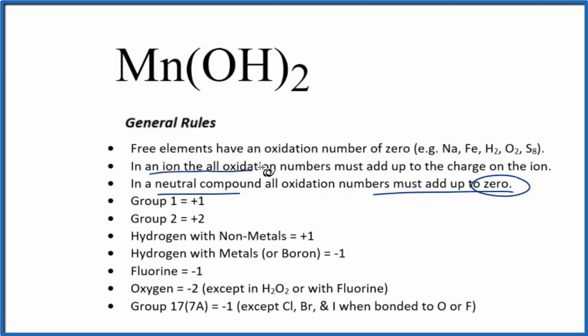And because of that, with an ion, all the oxidation numbers, they add up to the charge on the ion. So the hydroxide ion always has a one minus ionic charge. That means the whole thing here is going to have a minus one oxidation number if we add these elements up.